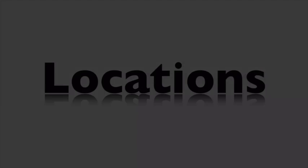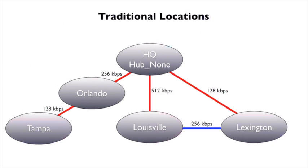One of the biggest changes we see in Communications Manager version 9 is the change to locations. Locations has been around for a long time in Communications Manager. It's a CAC — a call admission control mechanism — to make sure that we don't consume too much bandwidth across the IP WAN. But the way locations were traditionally implemented really wasn't perfect. The assumption with traditional locations was that we had a hub and spoke topology where every site had one connection.